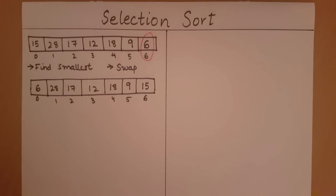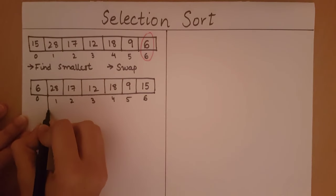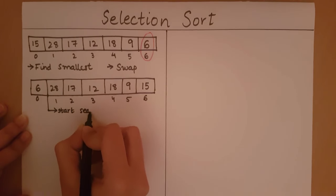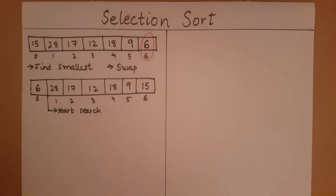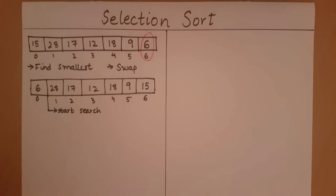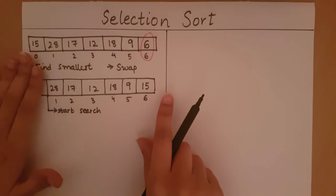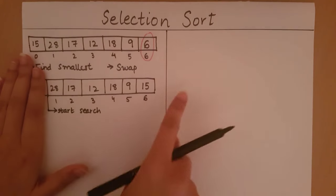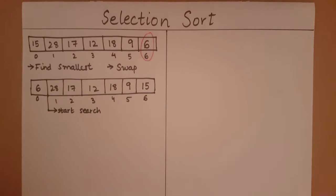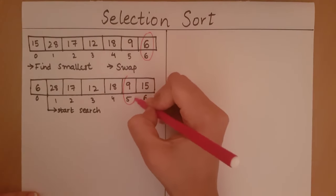Now we start our search for the next smallest element from all indexes after 6. We start the search from element at index 1 and end it at element 6. Within this part of the array, we have to search for the smallest element.